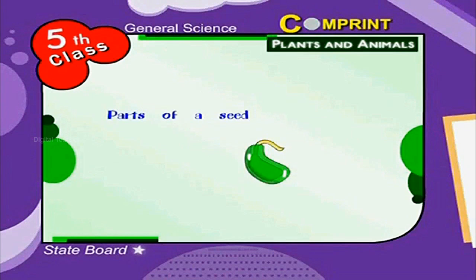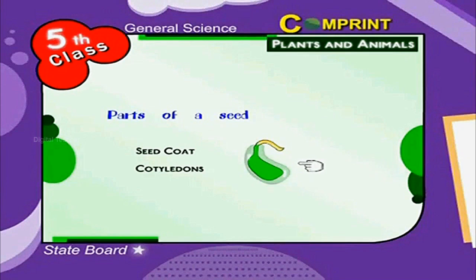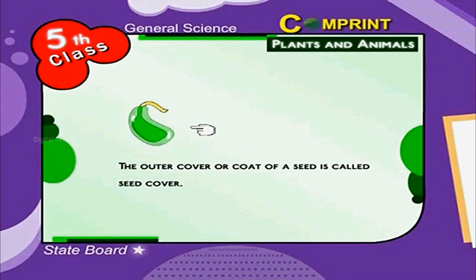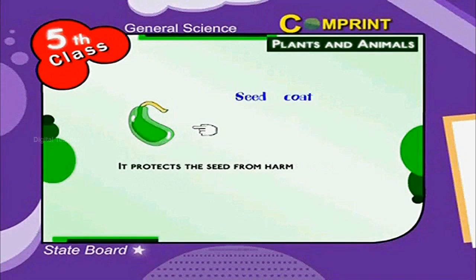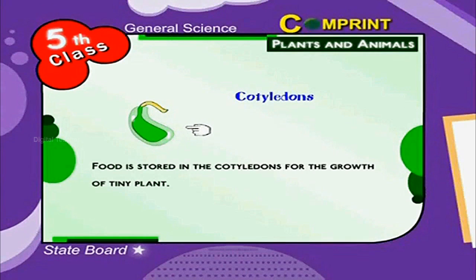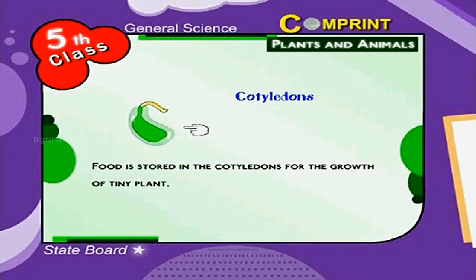Parts of a seed: seed coat and cotyledons. The outer cover or coat of a seed is called seed coat. It protects the seed from harm. Food is stored in the cotyledons for the growth of tiny plants.